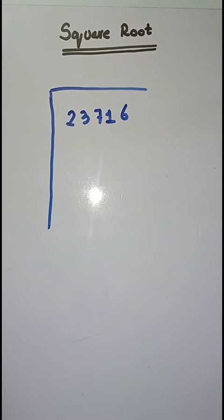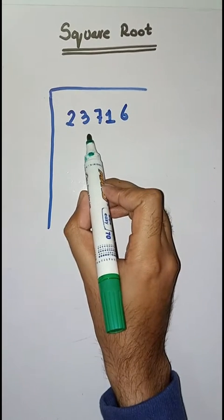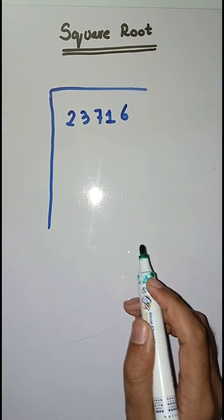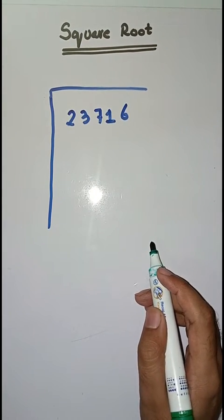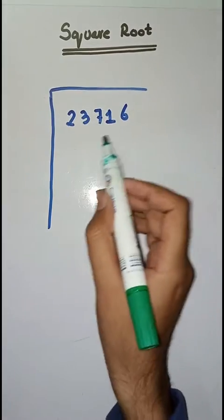We have to find square root of 23716. So what will we do? First we have to make pairs from right to left like this.